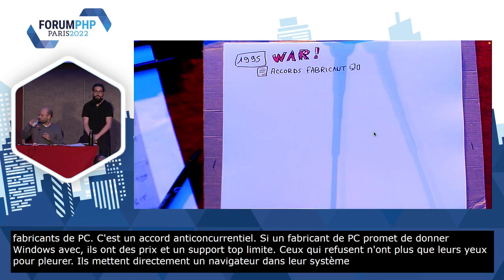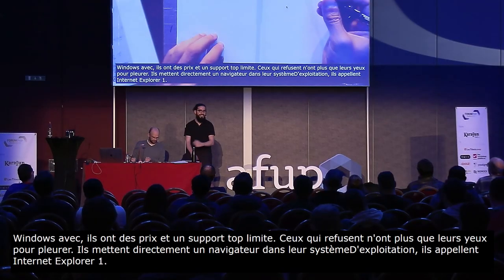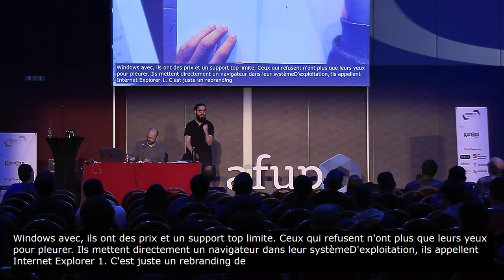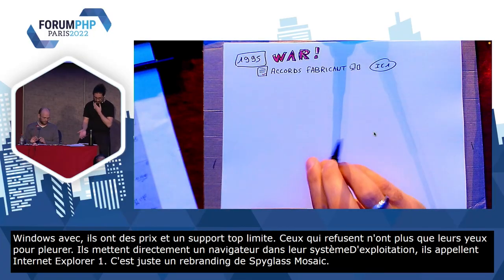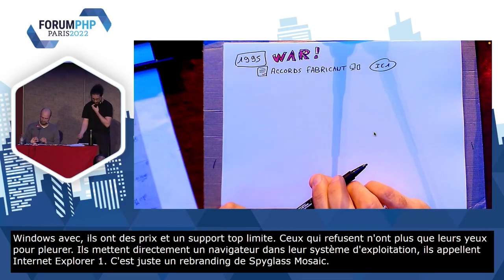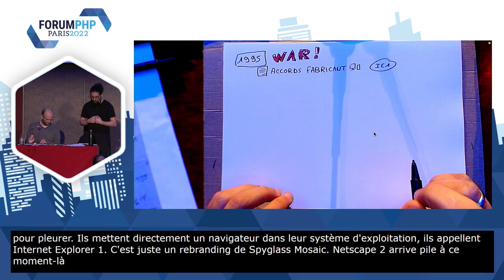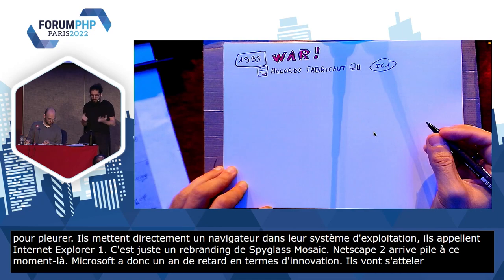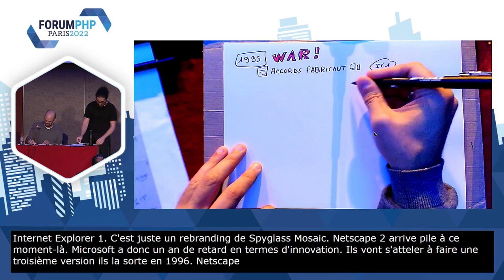Internet Explorer 1, c'est quoi ? C'est juste un rebranding de Spyglass Mosaic. J'ai déjà dit que Spyglass Mosaic n'avait pas spécialement innové. Internet Explorer 1 est totalement dans les choux comparé à Netscape. Typiquement, Netscape 2 arrive pile à ce moment-là. Microsoft a un an de retard en termes d'innovation. Ils vont s'atteler à faire une troisième version qu'ils sortent en 1996. Netscape 3 sort une semaine après. Ils ont encore un an de retard.